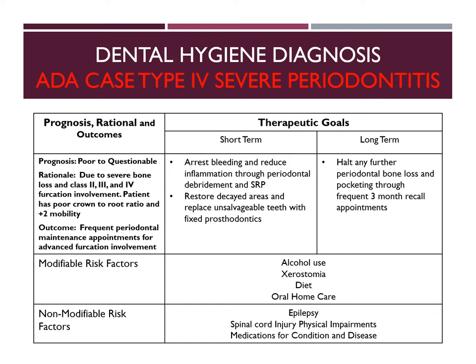For therapeutic goals, the short-term goals are to arrest bleeding and reduce inflammation through periodontal debridement and SRP, restore any decayed areas with composite or amalgam, and replace unsalvageable teeth with fixed prosthodontics — which can also be a long-term goal depending on financial stability. For the long-term goal, we are going to halt any further periodontal bone loss and pocketing through frequent 3-month recall appointments. Modifiable risk factors include alcohol use, xerostomia due to medications, diet, and oral home care.